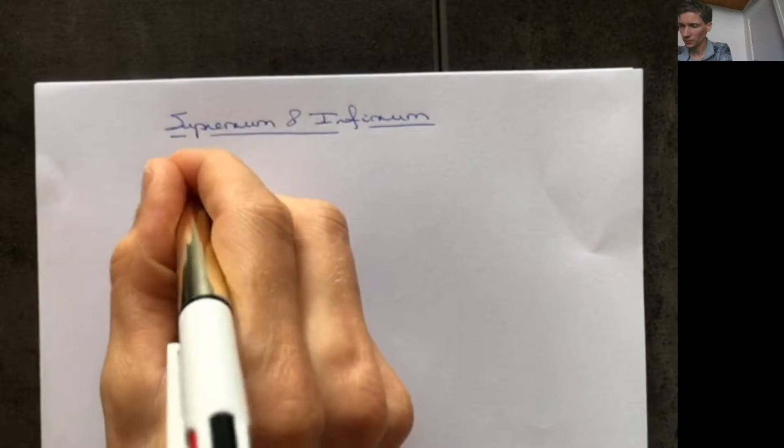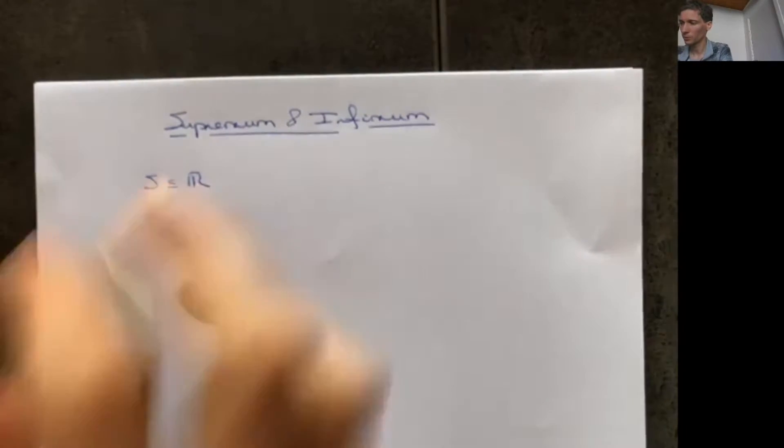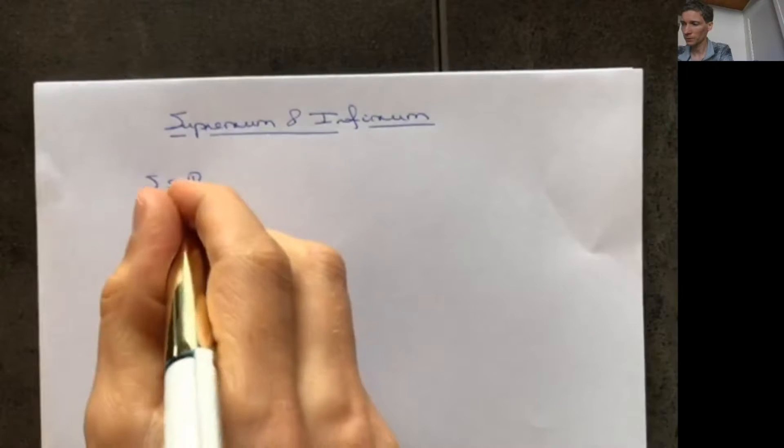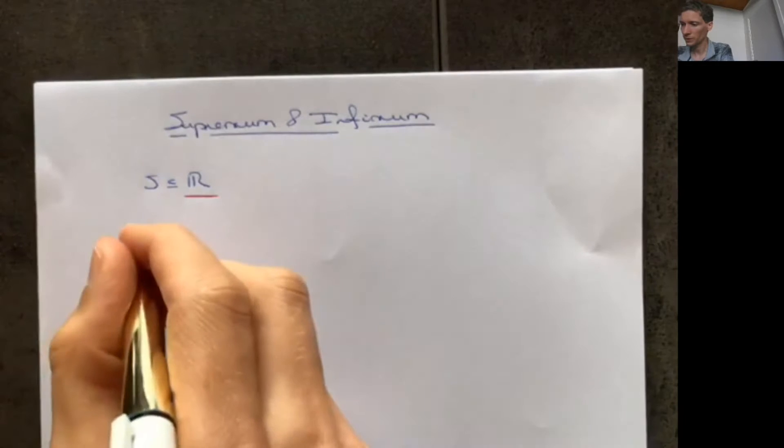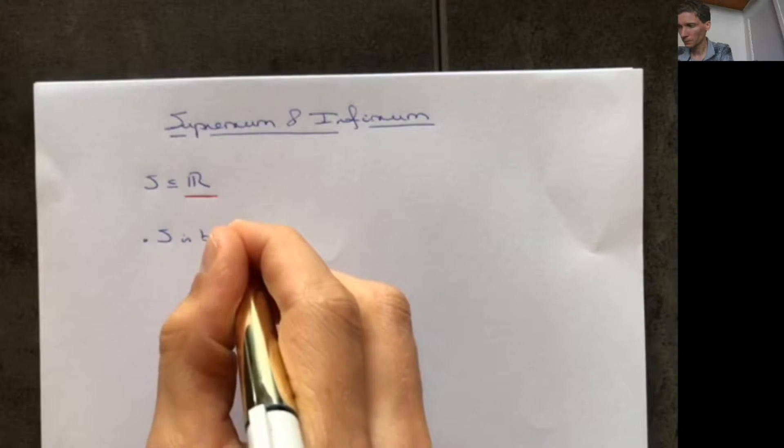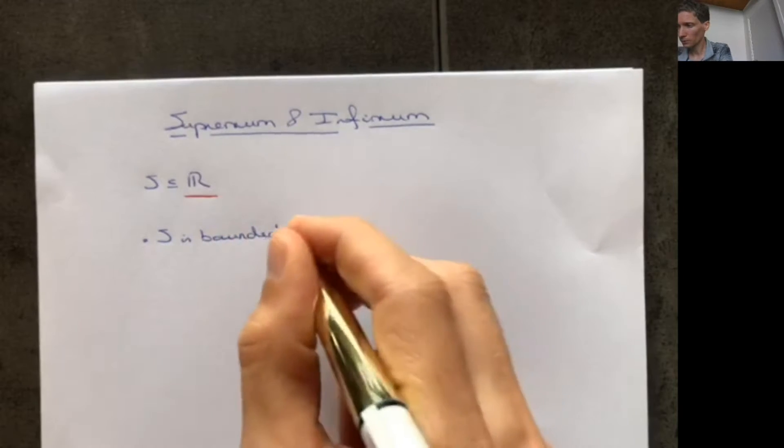Let's start by defining the notions of a supremum and infimum. First of all, we have to start from a set S, and here we take S to be a subset of R — so it's a subset of real numbers. The fact that S is a subset of R is important here. So it's a subset of numbers, and we say that the set S is bounded from above.